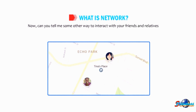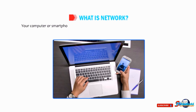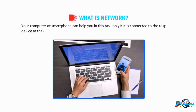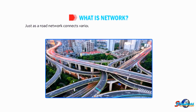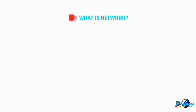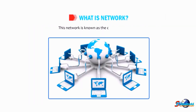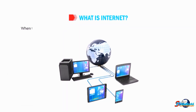Now, can you tell me some other way to interact with your friends and relatives rather than meeting them personally? Yes, it is possible via computer or smartphone. Your computer or smartphone can help you in this task only if it is connected to the respective device at the other end. Just as a road network connects various cities and towns, likewise there exists a network that connects different computers with each other. This network is known as the computer network.